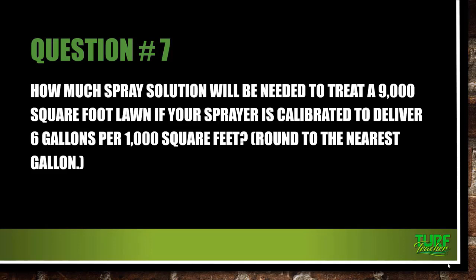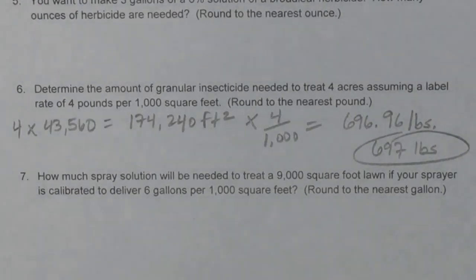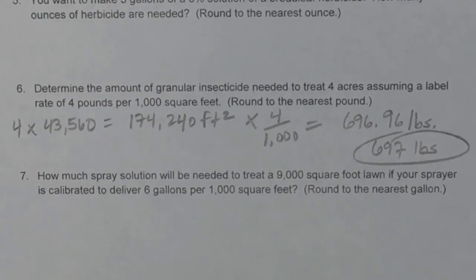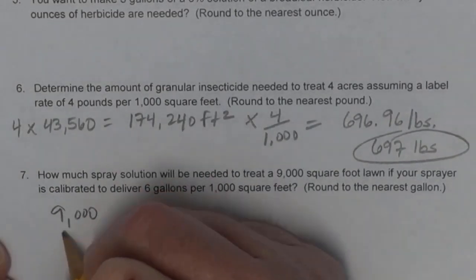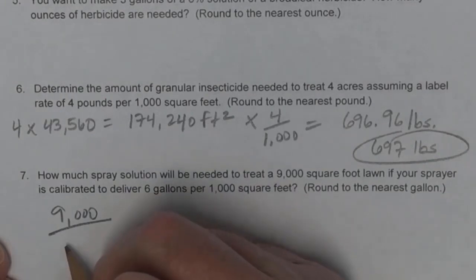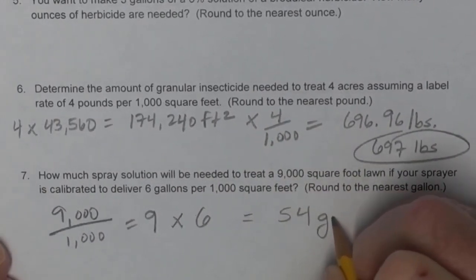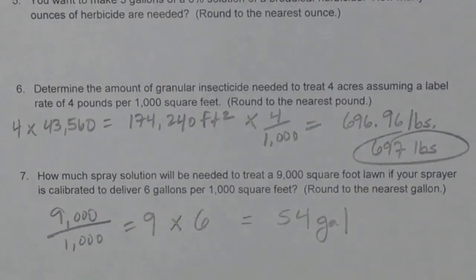Question number seven: how much spray solution will be needed to treat a 9,000 square foot lawn if your sprayer is calibrated to deliver 6 gallons per 1,000 square feet? We have 9,000 divided by 1,000, which gives 9 blocks. Multiply 9 times 6 gallons, and that gives us 54 gallons to treat the 9,000 square foot lawn.